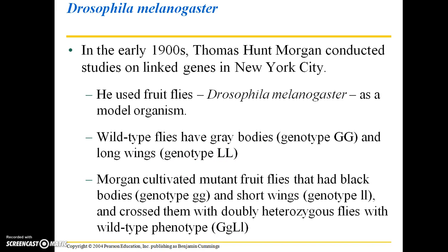Thomas Hunt Morgan cultivated mutant fruit flies that had black bodies, genotype gg, and short wings, genotype ll, and crossed them with doubly heterozygous flies with the wild-type phenotype. Doubly heterozygous simply means that at both of those locations they're heterozygous — they have one of each type of allele — but they still retain the wild-type phenotype. So if they have one capital-letter allele at each location, they're still going to express those traits: a gray body and long wings.